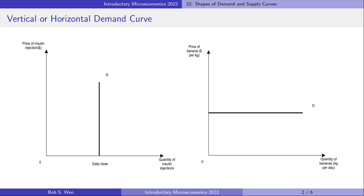Usually the demand curve is downward sloping because of the law of demand. But there could be the extreme case that the demand curve is vertical or horizontal.